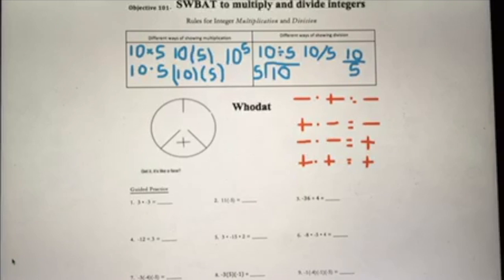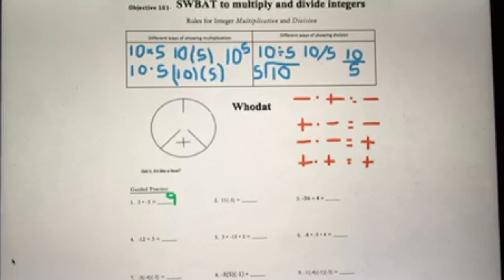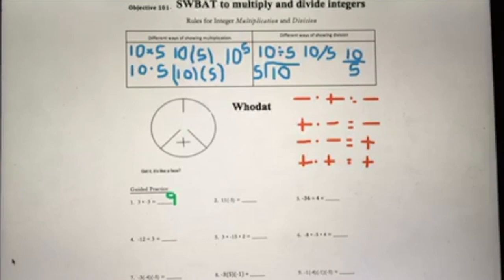Let's head down to the guided practice. My suggestion whenever you're multiplying and dividing positives and negatives is just to worry about the numbers first. Look at number one: we have 3 times negative 3. Ignore the positives and negatives and just do 3 times 3, which is 9. Now look back to the values — we had a positive and a negative, so that's going to be a negative value. Our final answer for 3 times negative 3 is negative 9.